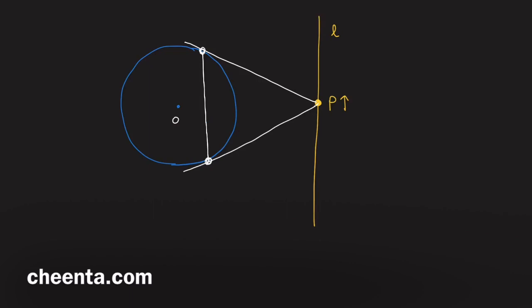We join those two tangent points M and N, and X is the midpoint of MN. The goal is to show that the locus of X is a circle.